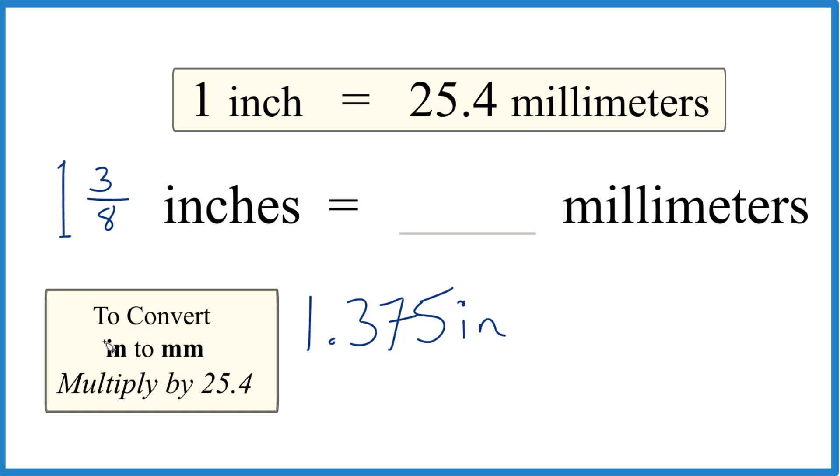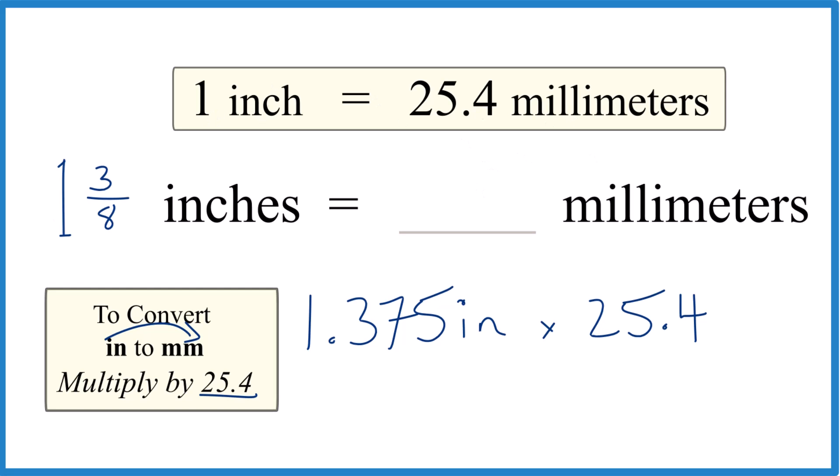When we go from inches to millimeters, we multiply by 25.4. And that's not surprising because there are 25.4 millimeters in one inch. You can even put the units there: millimeters per inch.